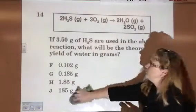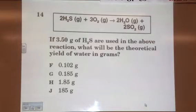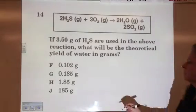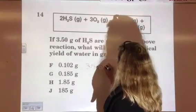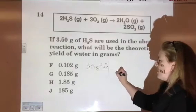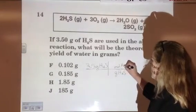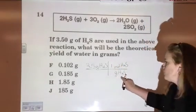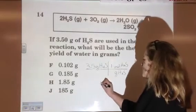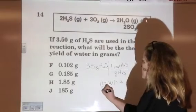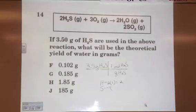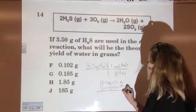Next question. If 3.5 grams of hydrogen sulfide are used in the above reaction, what is the theoretical yield of water in grams? How are we solving this? Dimensional analysis. What is our given? What are we starting with? 3.5 grams H2S. What do I bring down? Grams of H2S. What am I first converting it to? Moles. Where do I find the numbers? The periodic table. I've got two atoms of hydrogen and a molar mass of approximately 1. Sulfur, I've got one atom and a molar mass of approximately 32. So I'm going to have a total molar mass of 34.